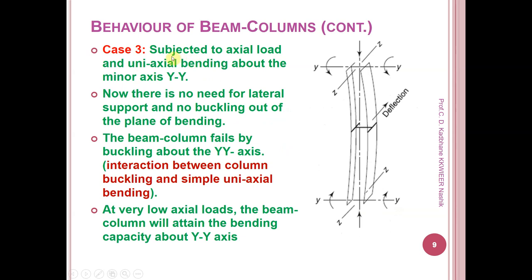Case 3: whenever a beam column is subjected to axial load and uniaxial bending moment about the minor Y-Y axis, there is no need for lateral support because bending is about the minor axis. The minor axis carries less load and less bending, so there is no possibility of out-of-plane bending. The beam column fails by buckling about the Y-Y axis — interaction between column buckling and simple uniaxial bending. At very low axial loads, the beam column attains the bending capacity about Y-Y axis, which is less.